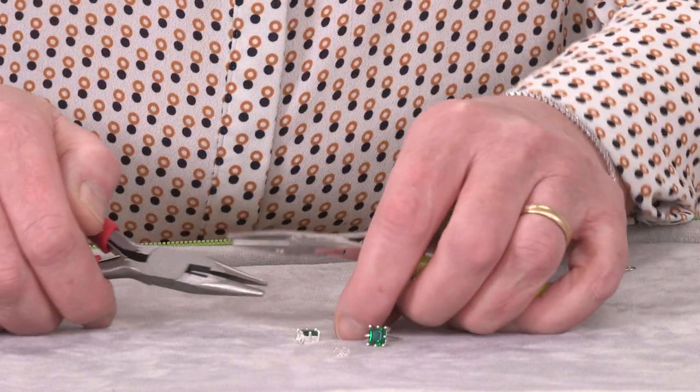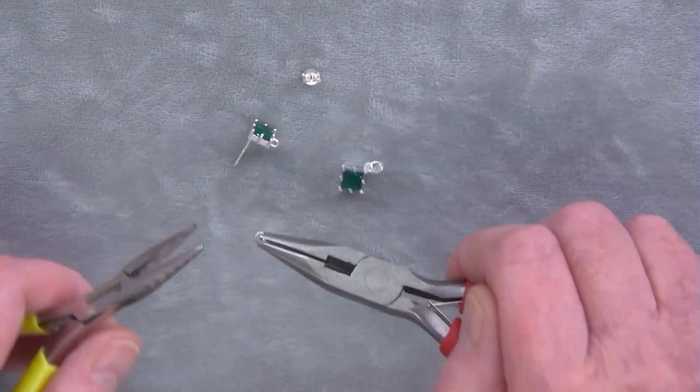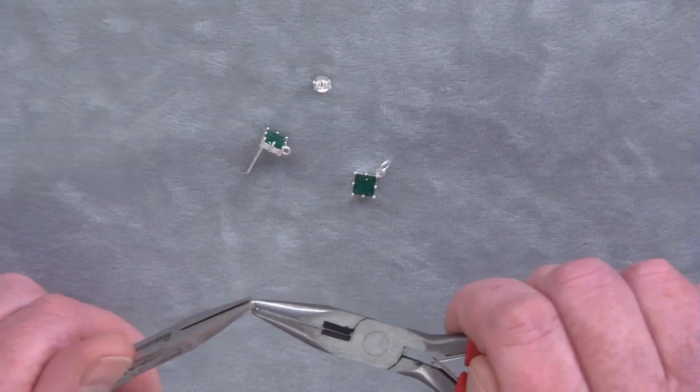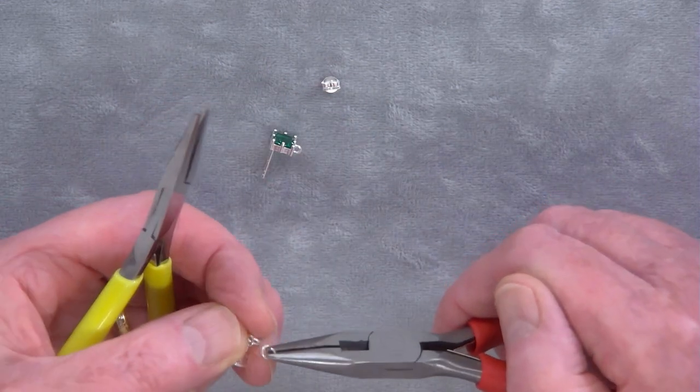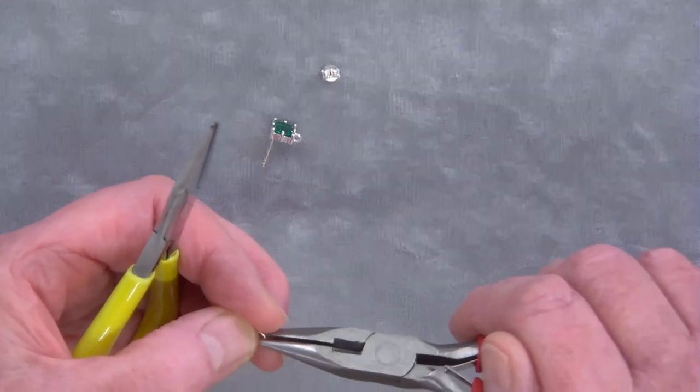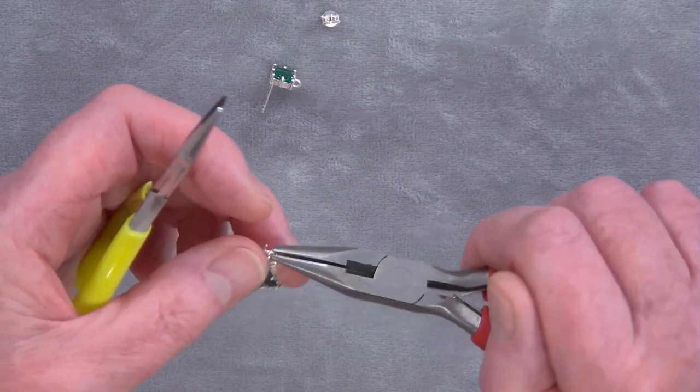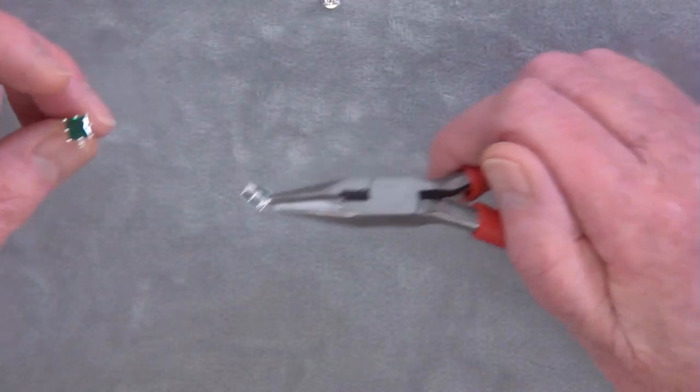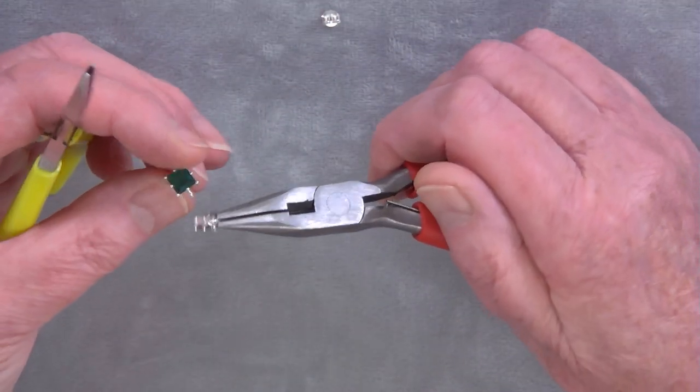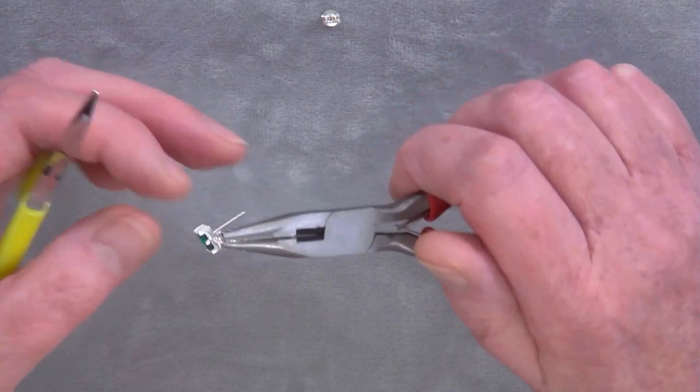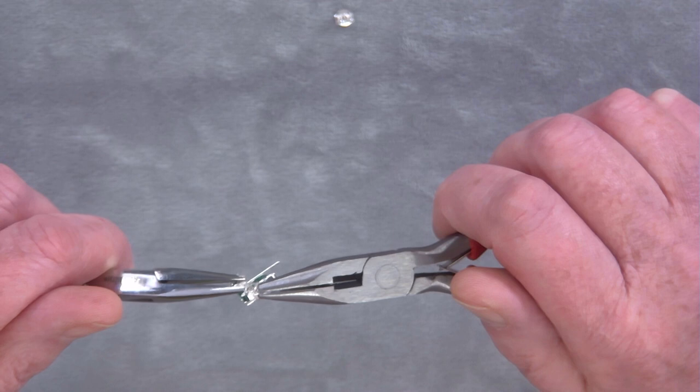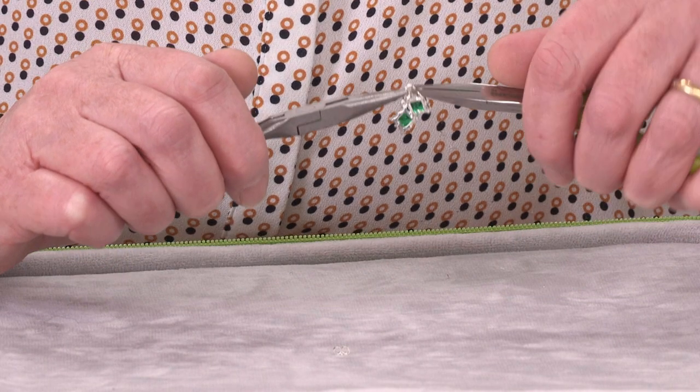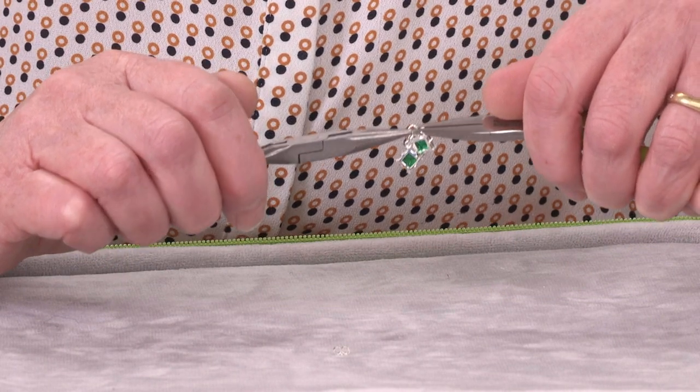Then we take a smaller jump ring and join that to our element we've just attached, and then join that to our earring finding and then just close up that smaller jump ring.